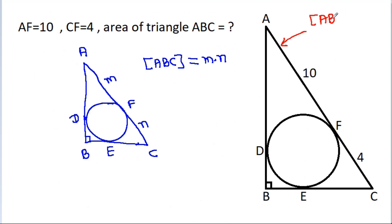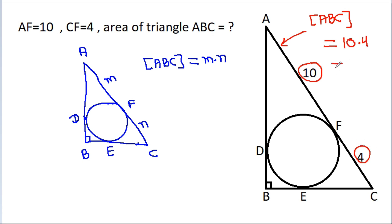So the area of ABC equals 10 times 4, which is 40.